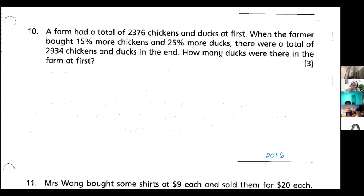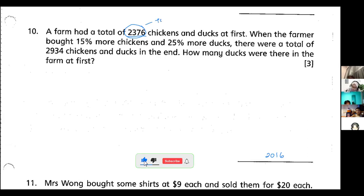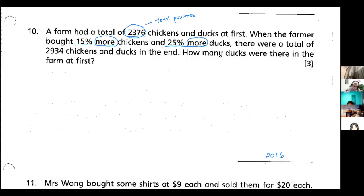This question says a farm had a total of 2376 chickens and ducks at first. This is the total number — we call chickens and ducks 'poultry,' birds you can find on a farm. When the farmer bought 15% more chickens and 25% more ducks, there were a total of 2934 chickens and ducks in the end. The question asks: how many ducks were there in the farm at first?